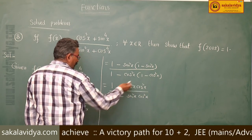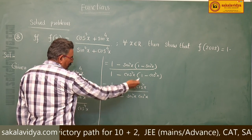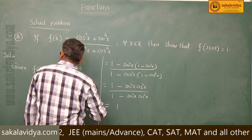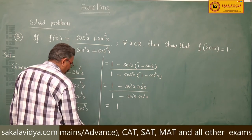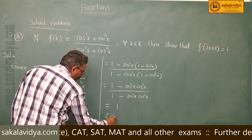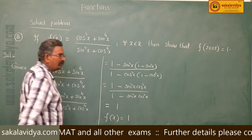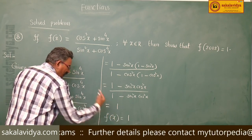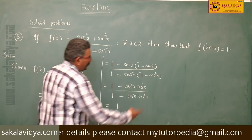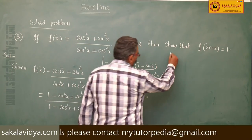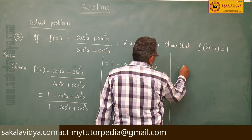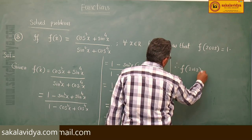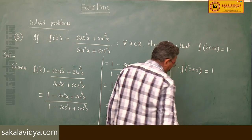Both numerator and denominator are equal, so they cancel, and we get 1. That means f of x is a constant function — for all real values of x, we get 1 only. Therefore, f of 2012 is also equal to 1.